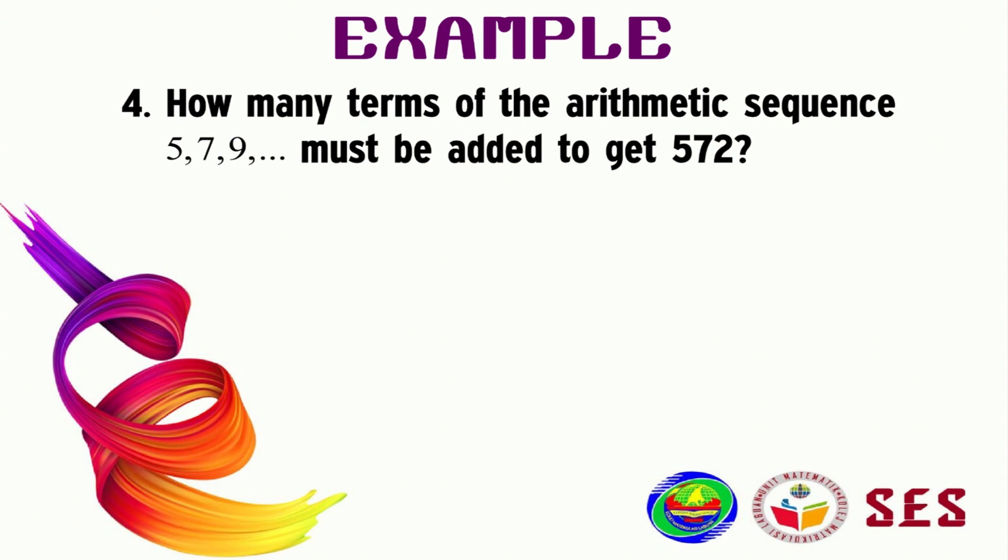The words 'how many terms' refers to how many n actually, so what is the n value? And the word 'added' here actually refers to sum, and the word sum means we need to associate with the Sn formula, not Tn formula.